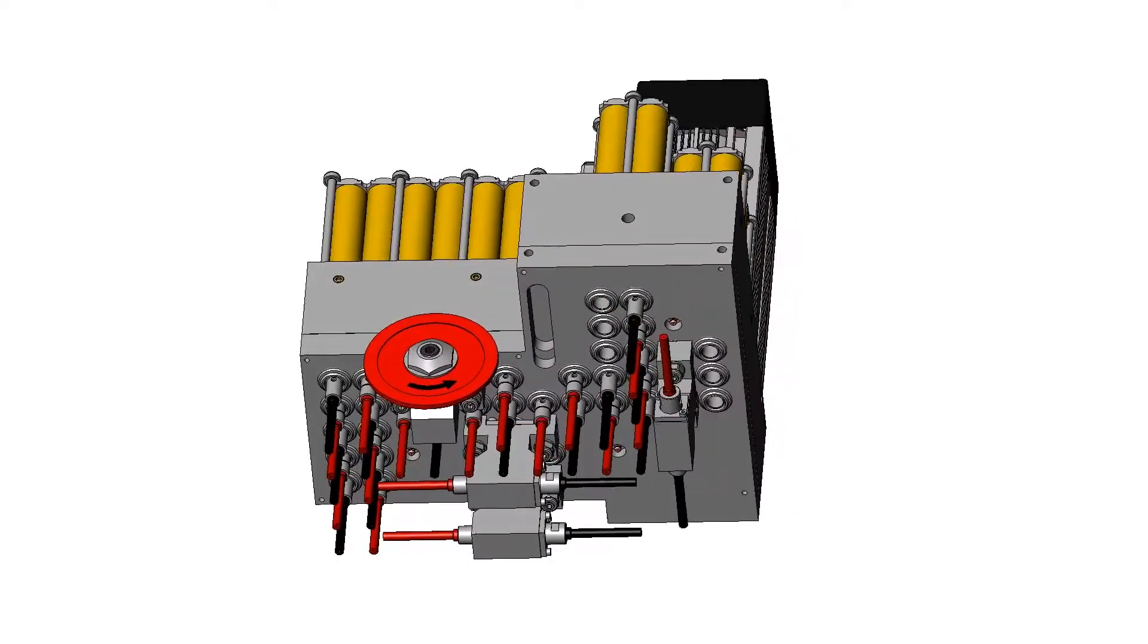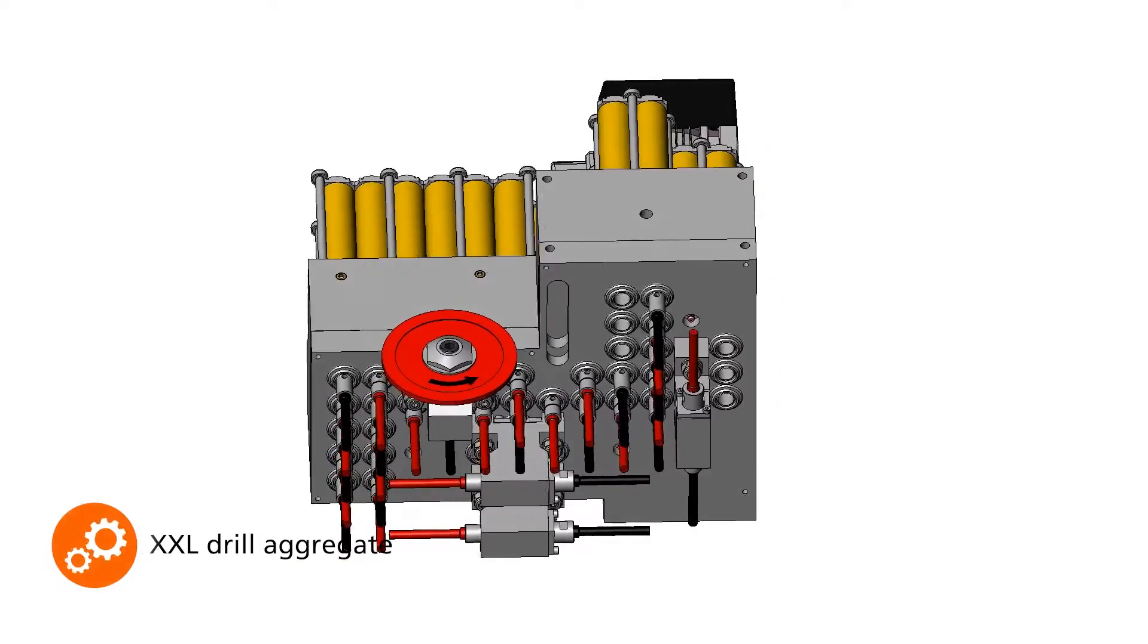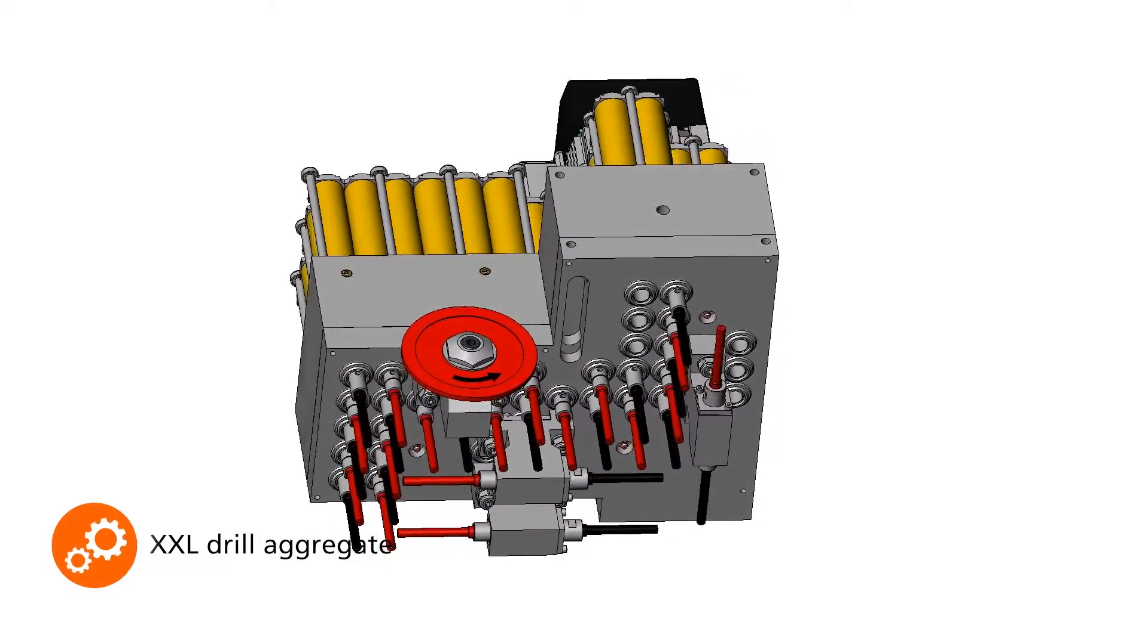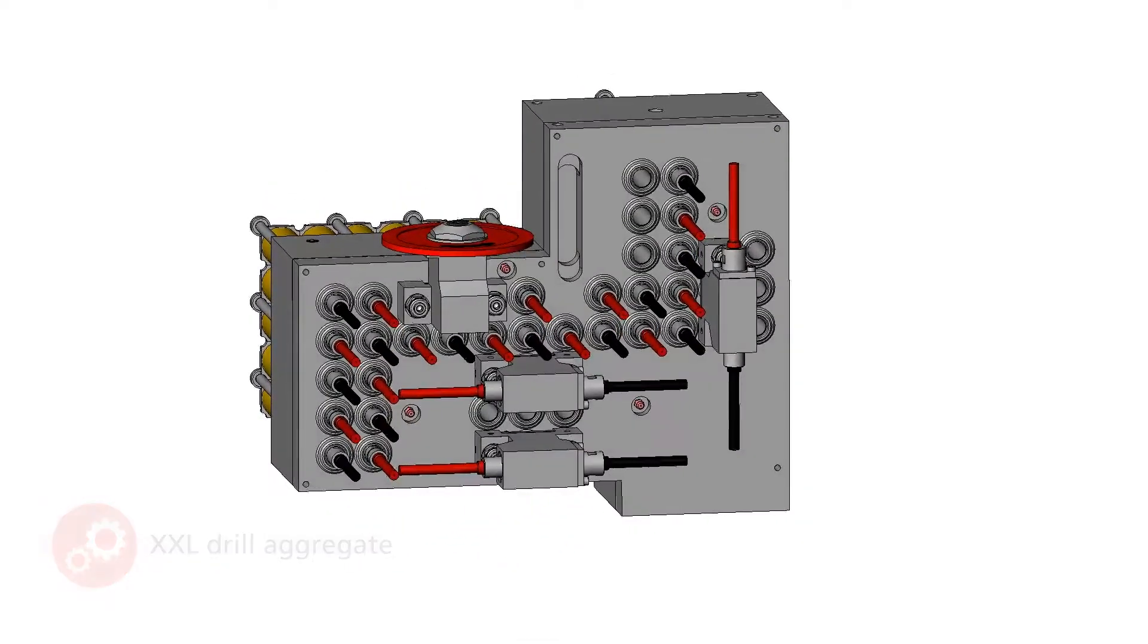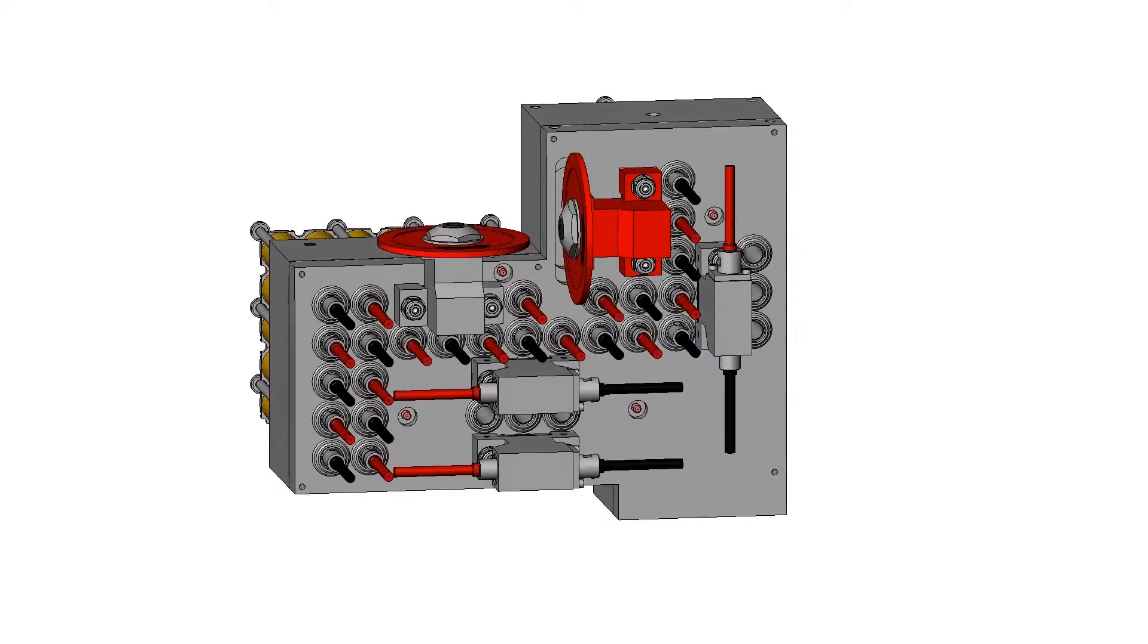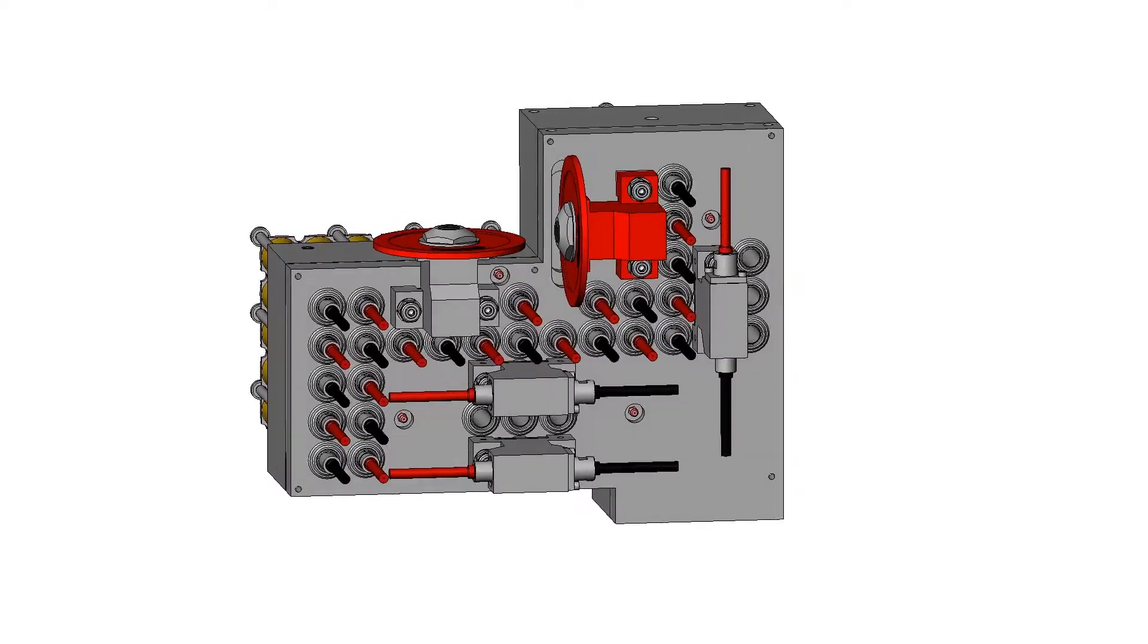The XXL drill head ensures maximum performance with 25 vertical and 6 horizontal spindles. You can also order a second grooving saw with additional horizontal drills for this unit.